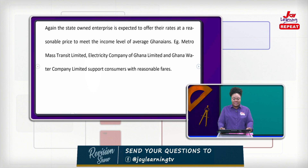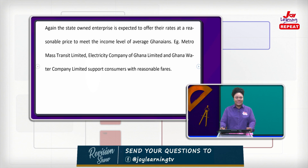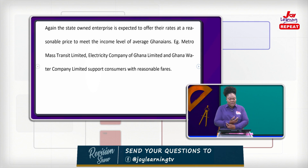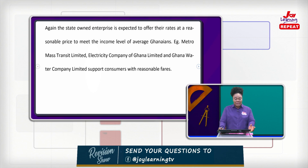The state-owned enterprise is expected to offer rates at reasonable prices to meet the income level of every average Ghanaian. For example, metro buses pick up students from one place to another without taking money from them. But if you join a private business transport, money will be collected from you. The Electricity Company of Ghana keeps prices low so that everyone can afford.